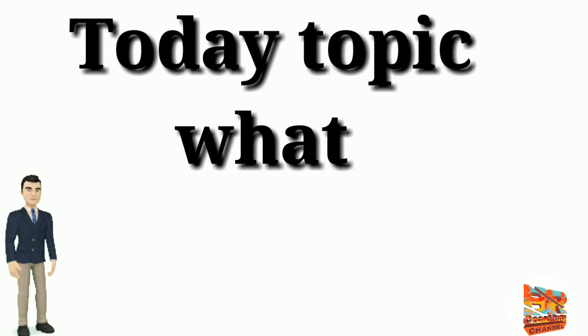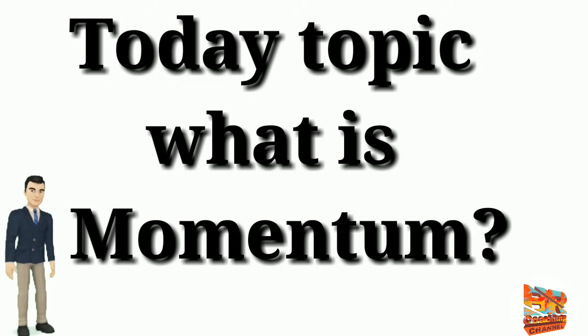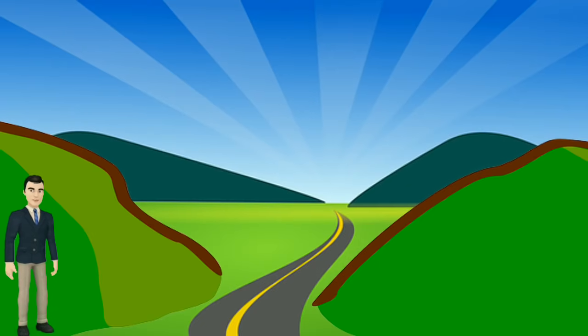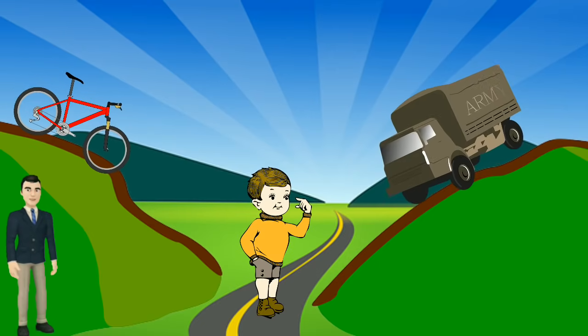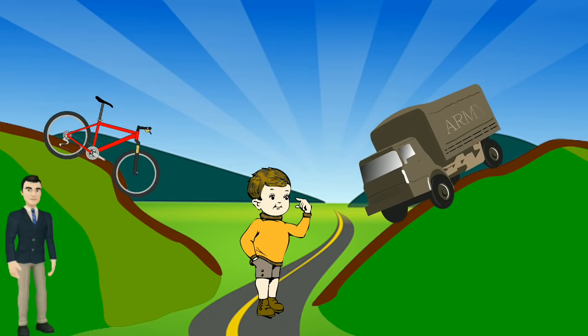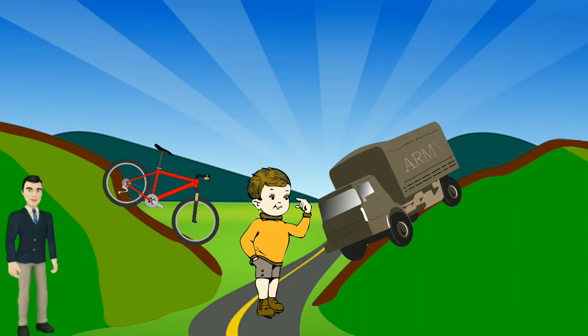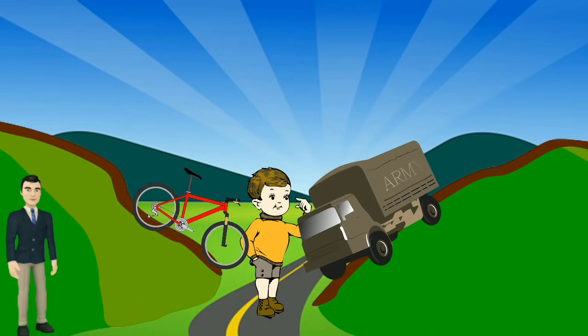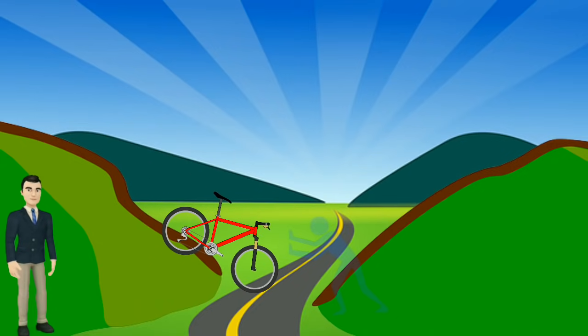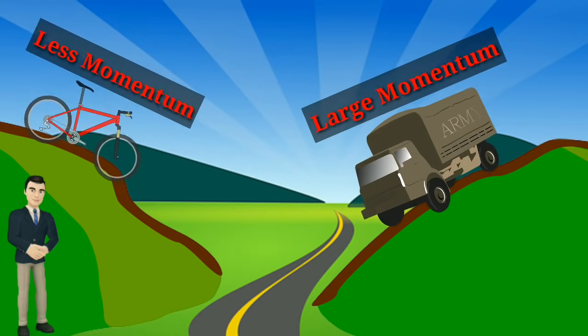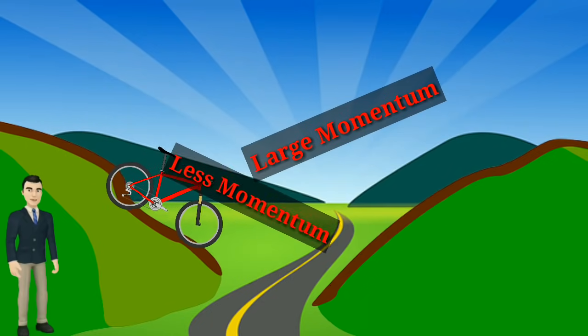Today's topic: What is momentum? Suppose you're standing at the bottom of a hill and you're faced with the option of stopping a runaway semi-truck or stopping a runaway bicycle. You'd probably choose to stop the bike, right? The reasoning behind this is that the semi-truck has more momentum than the bike.